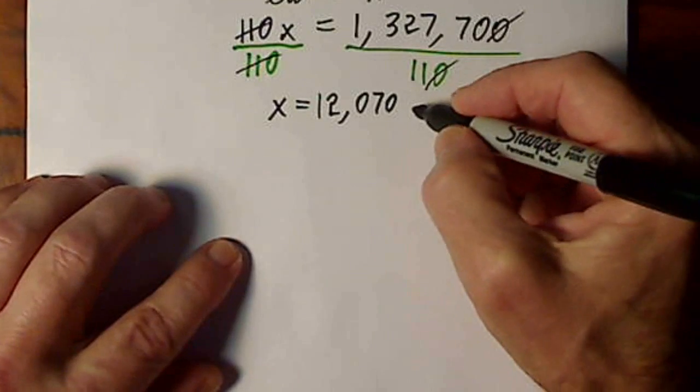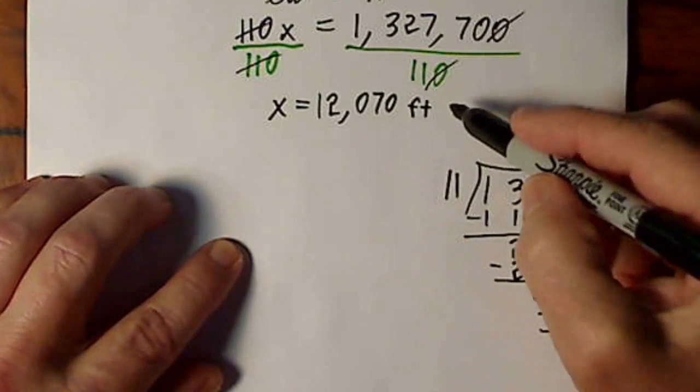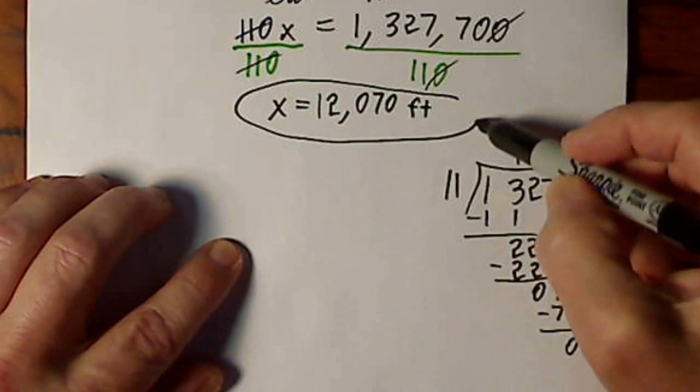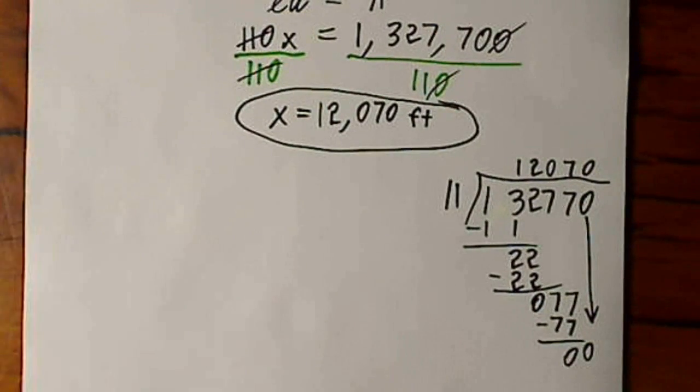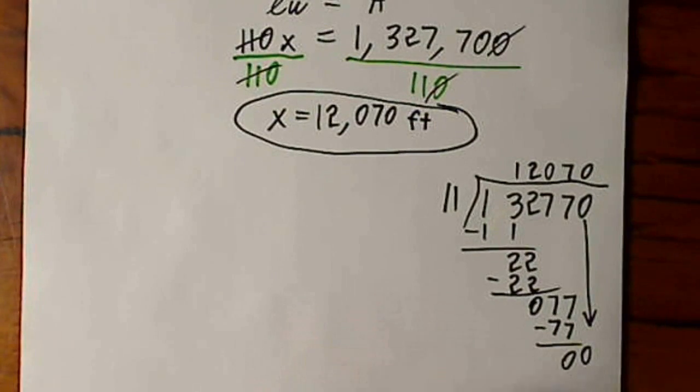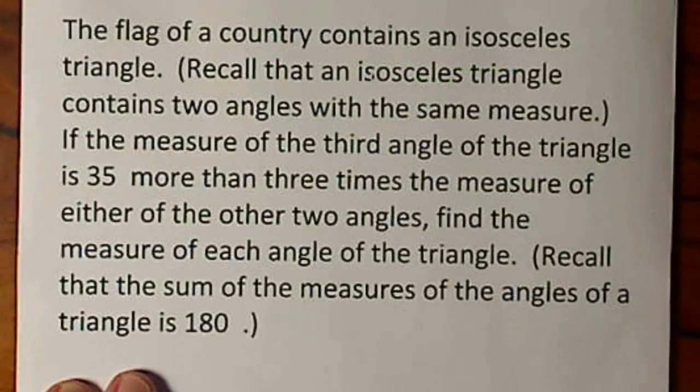So I ended up with 12,070. And this is feet. So that's how long our runway is. We could check it. I'm not going to take time to do that now. Let's look at the next word problem.